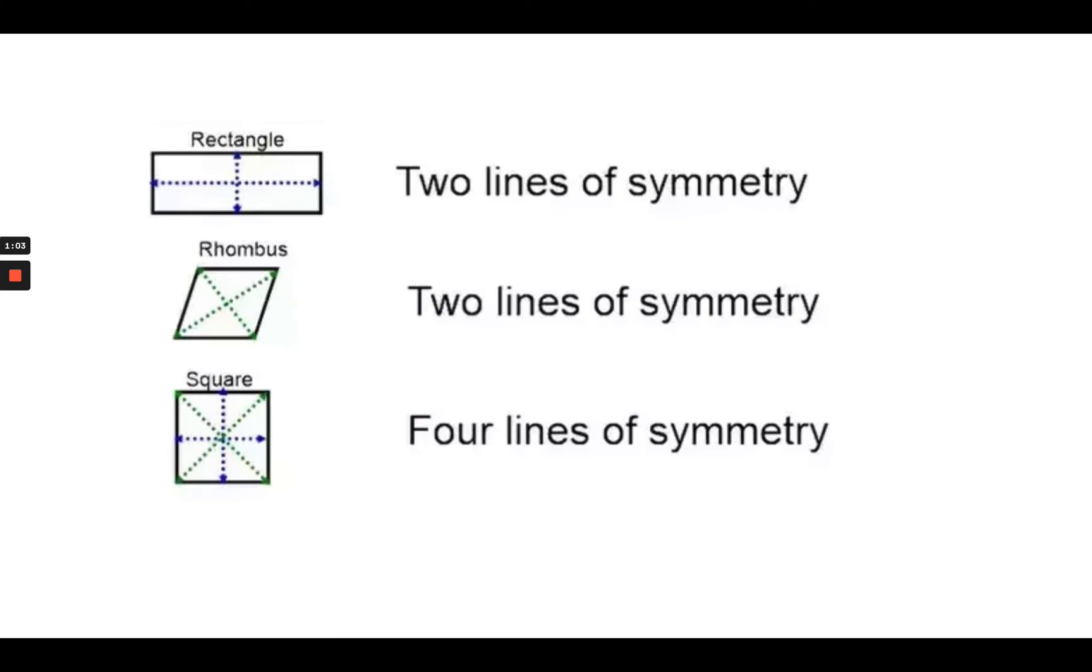A square has four lines. You can fold it in half both ways. You can also fold it diagonal both ways.